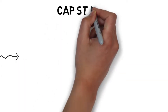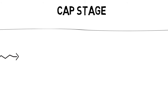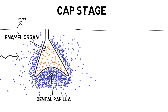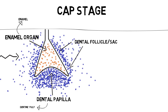In the cap stage we start to see some differentiation within the cells. The cap part of the tooth bud is now called the enamel organ, since it will eventually give rise to your enamel. The ball of ectomesenchyme cells resting under this enamel organ is known as the dental papilla, since it will eventually give rise to your dentine and pulp. The ectomesenchyme cells surrounding the enamel organ are called the dental follicle or dental sac.